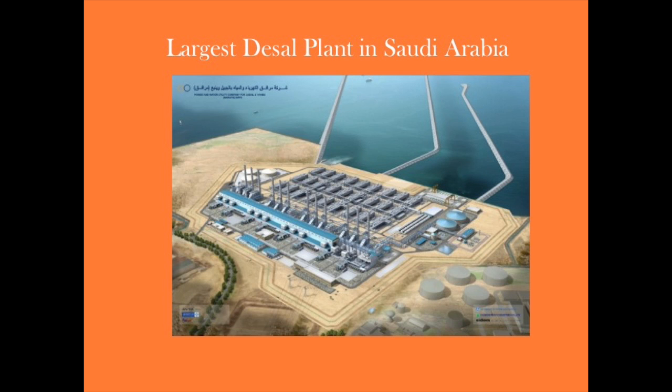Currently the largest desalination plant exists in Saudi Arabia. It produces 800,000 cubic meters of water a day and nearly 70% of the country's water comes from desalination.